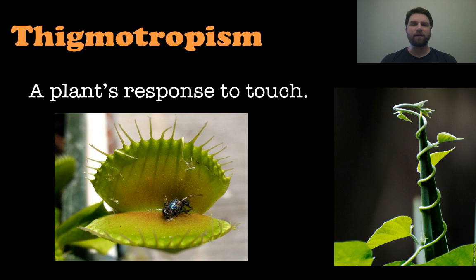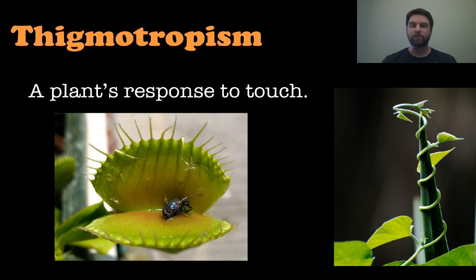Finally, we have thigmotropism, which refers to touch. Plants will respond to touch in a couple of different ways. You have a Venus flytrap on the left-hand side — when it feels prey in the area where the mouth is open, it will close, trapping the prey. Or if you look at a plant that grows in a spiral pattern around something it's holding onto, it starts growing in that curling fashion because it feels what it's growing on.